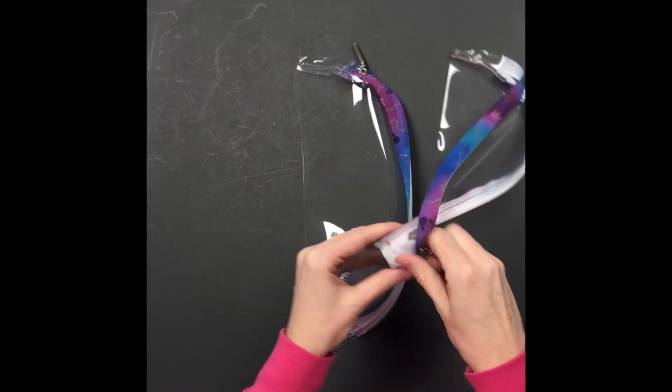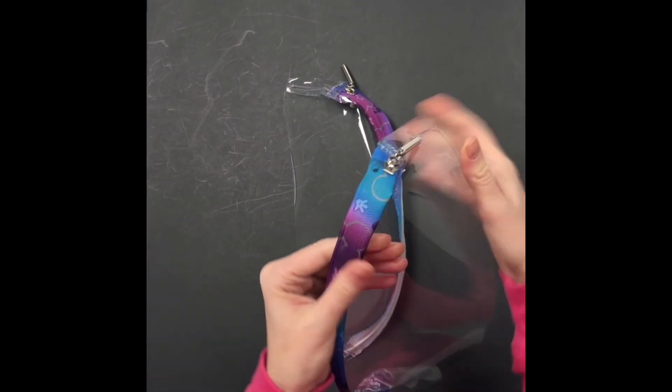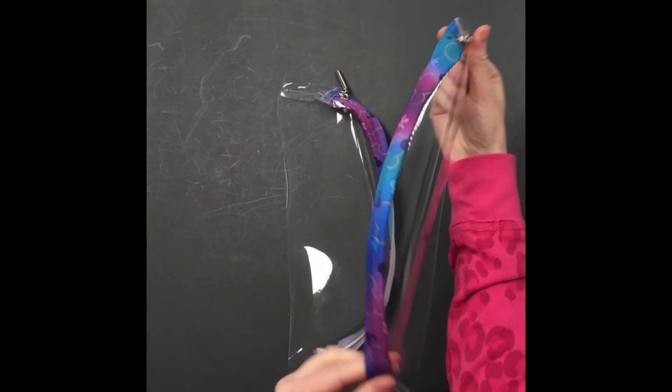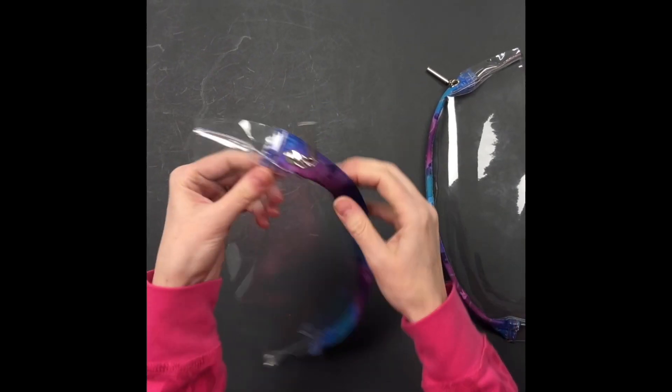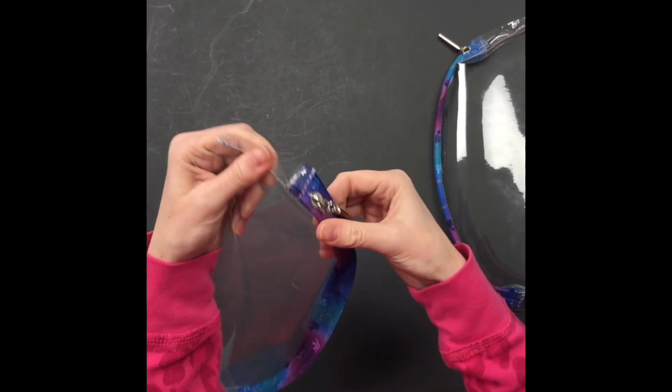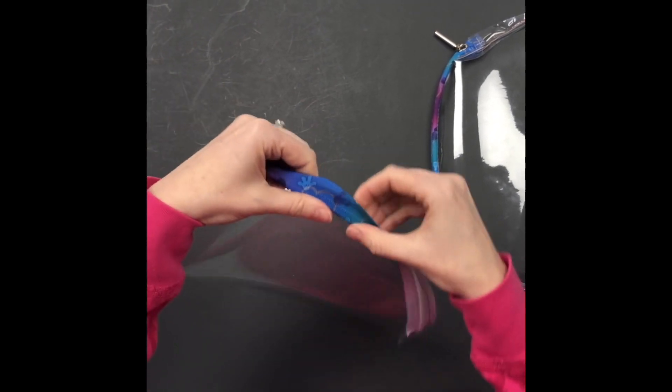So I am choosing not to top stitch this side, and I'm going to do that to both of these where I just kind of flip it to the right side but I'm going to let it naturally roll underneath.